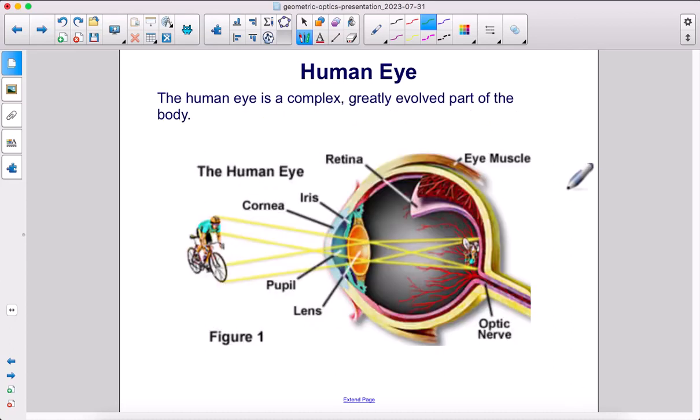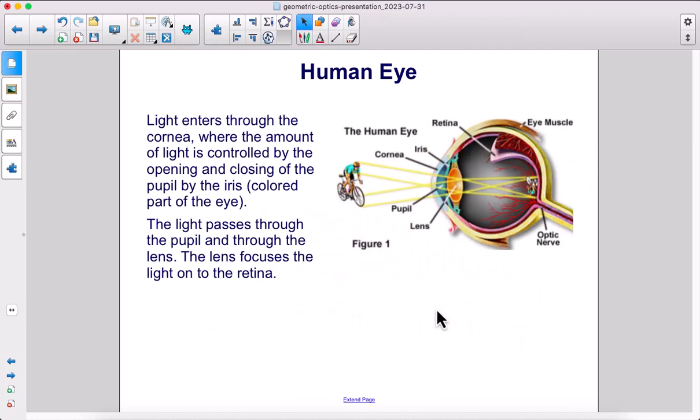The human eye is a complex, greatly evolved part of the body. Light enters through the cornea, where the amount of light is controlled by the opening and closing of the pupil by the iris, the colored part of the eye. The light passes through the pupil and through the lens. The lens focuses the light onto the retina.